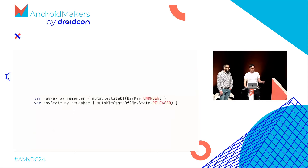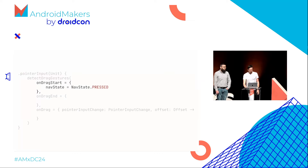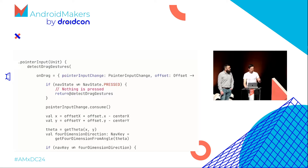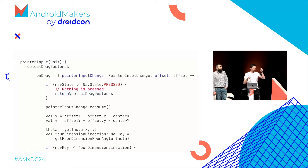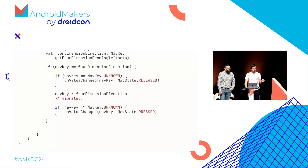We put the nav key and nav state in remember. Then we start with detectDragGestures. On drag start, we set the state to press. On drag, we fail fast if not pressed, then consume the pointer input, apply the offset relative to center, compute theta with getTheta, get the four-direction, and update only if the position is new.